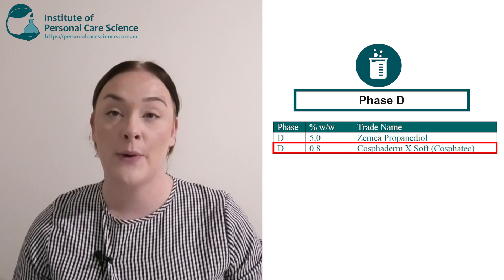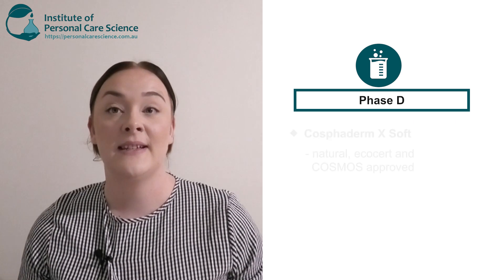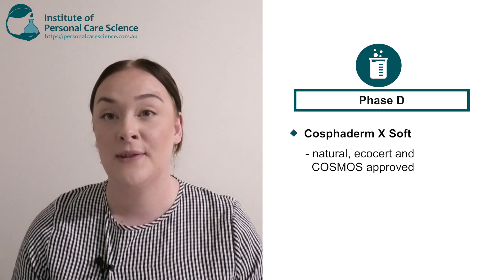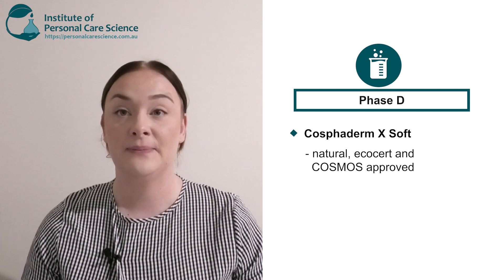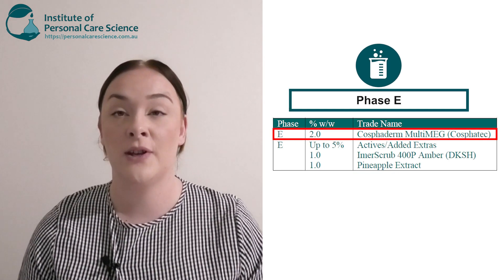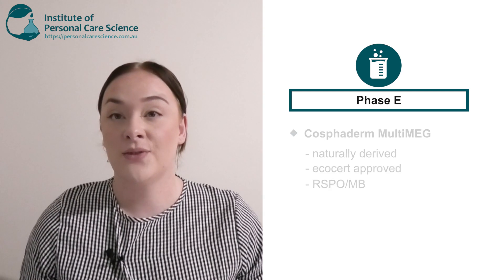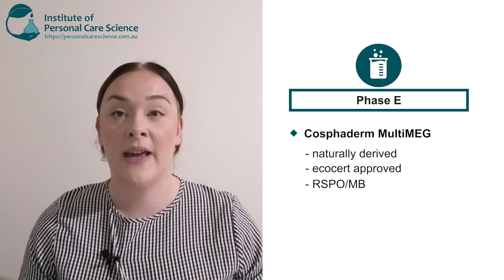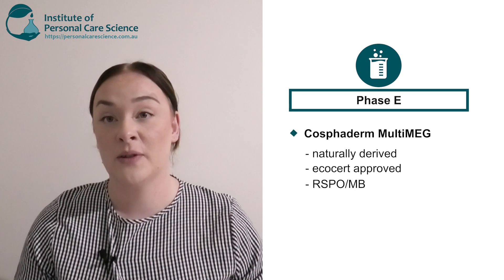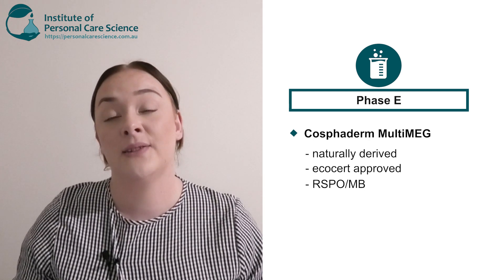Next is my gum. I've chosen the Cosforderm X-Soft by Cosvotec. This is a natural gum and it's also EcoCert and Cosmos approved. Next is my preservative — I'm going to use the Cosforderm Multi-Meg by Cosvotec. This is naturally derived, EcoCert and Cosmos approved, and also RSPO mass balance certified.